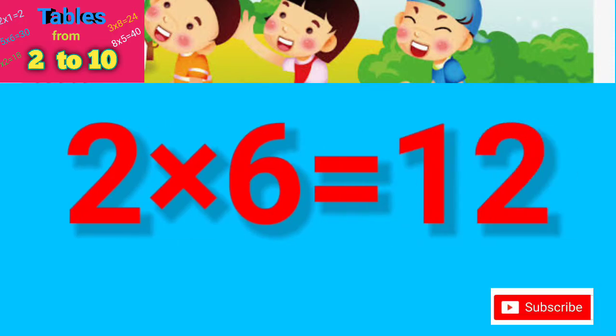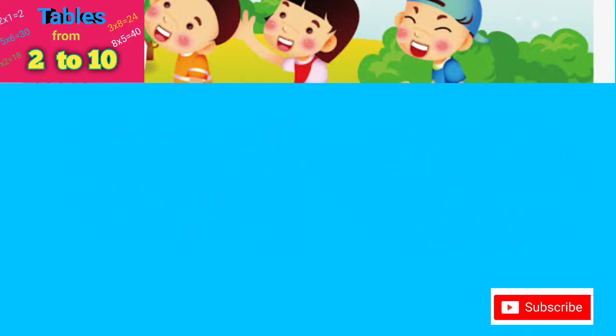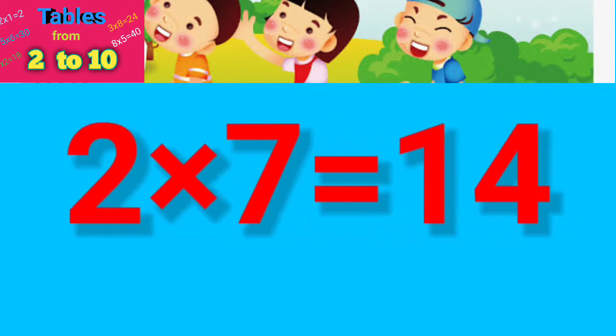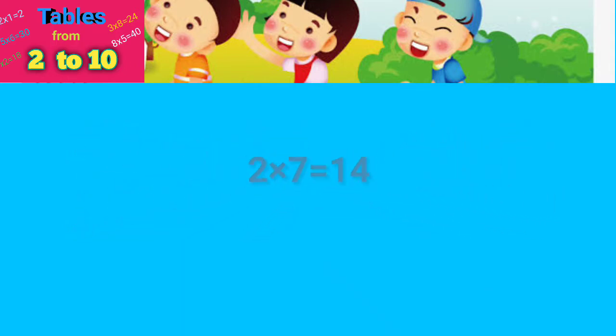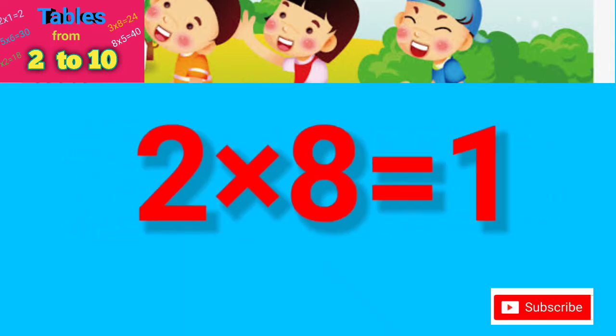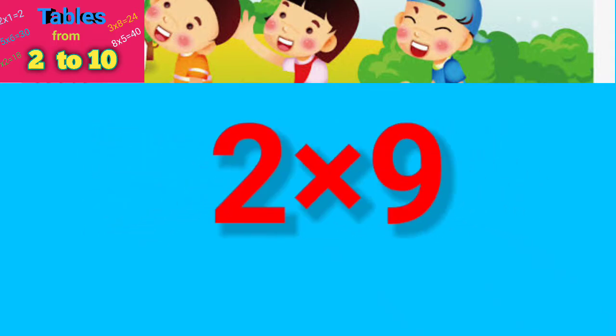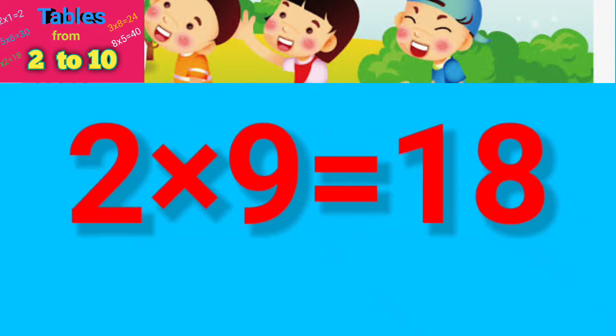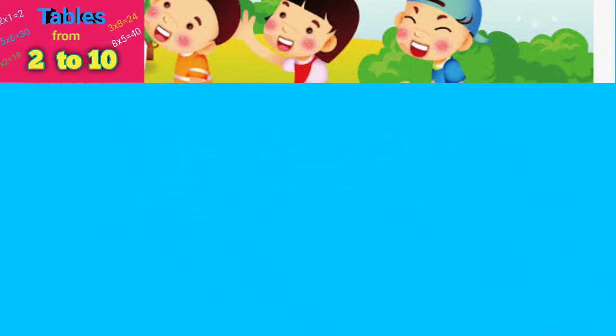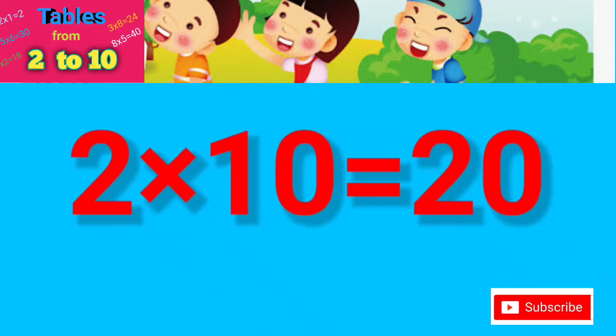2×6=12, 2×7=14, 2×8=16, 2×9=18, 2×10=20.